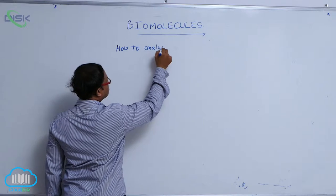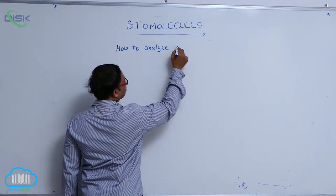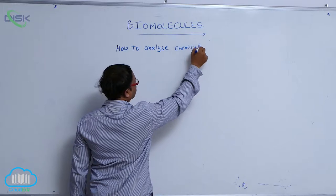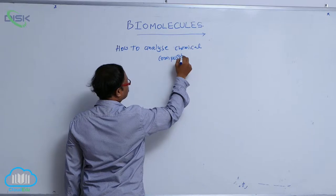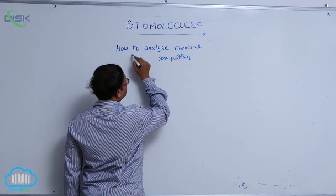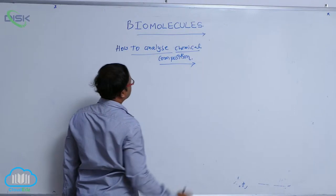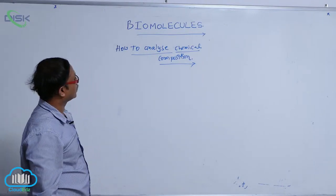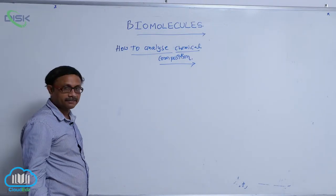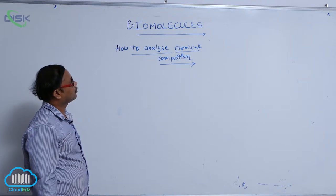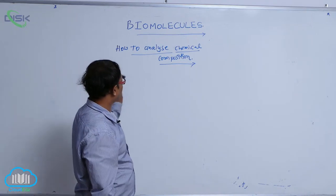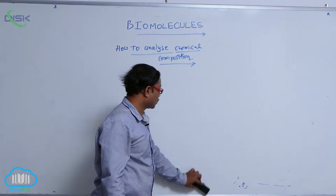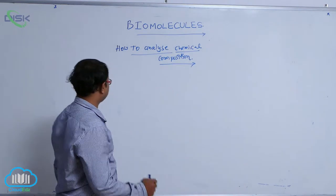How to analyze chemical composition — so how to analyze that chemical composition of biomolecules, and what type is present? So, chemical composition — how to analyze the chemical composition of living organisms' material. For example, you take a piece of living material.